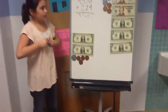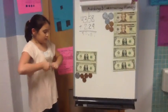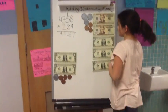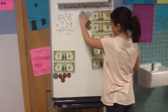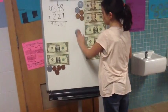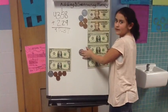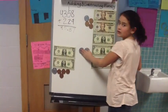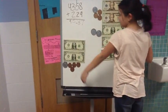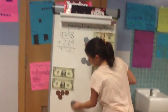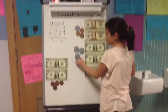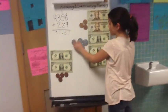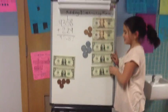Now I'm going to show you how to do it in money, and we should get the exact same answer. First we're going to add up our coins. We have a quarter, which is 25 cents, plus another quarter, which equals 50 cents, plus another quarter, which equals 75 cents. Then we add our nickel, which equals 80 cents.